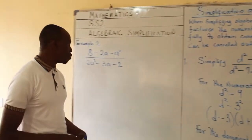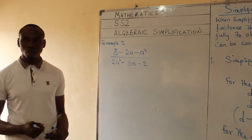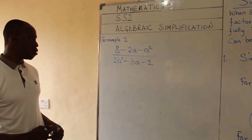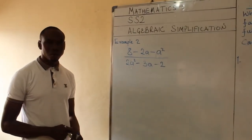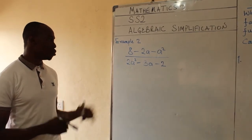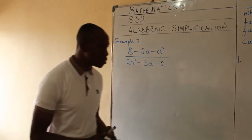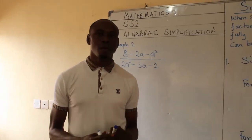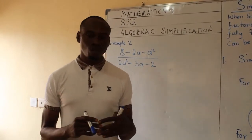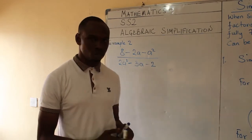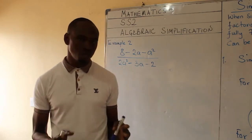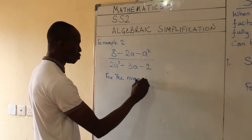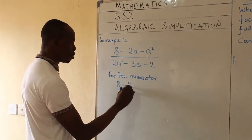We have a second example to strengthen our knowledge of simplification of algebraic fractions. The question says (8 - 2a - a²) all over (2a² - 3a - 2). These are two algebraic expressions, and we have to factorize them. I believe some students are learning to factorize for the first time, so I will write down the steps to follow. For the numerator, I have 8 - 2a - a².